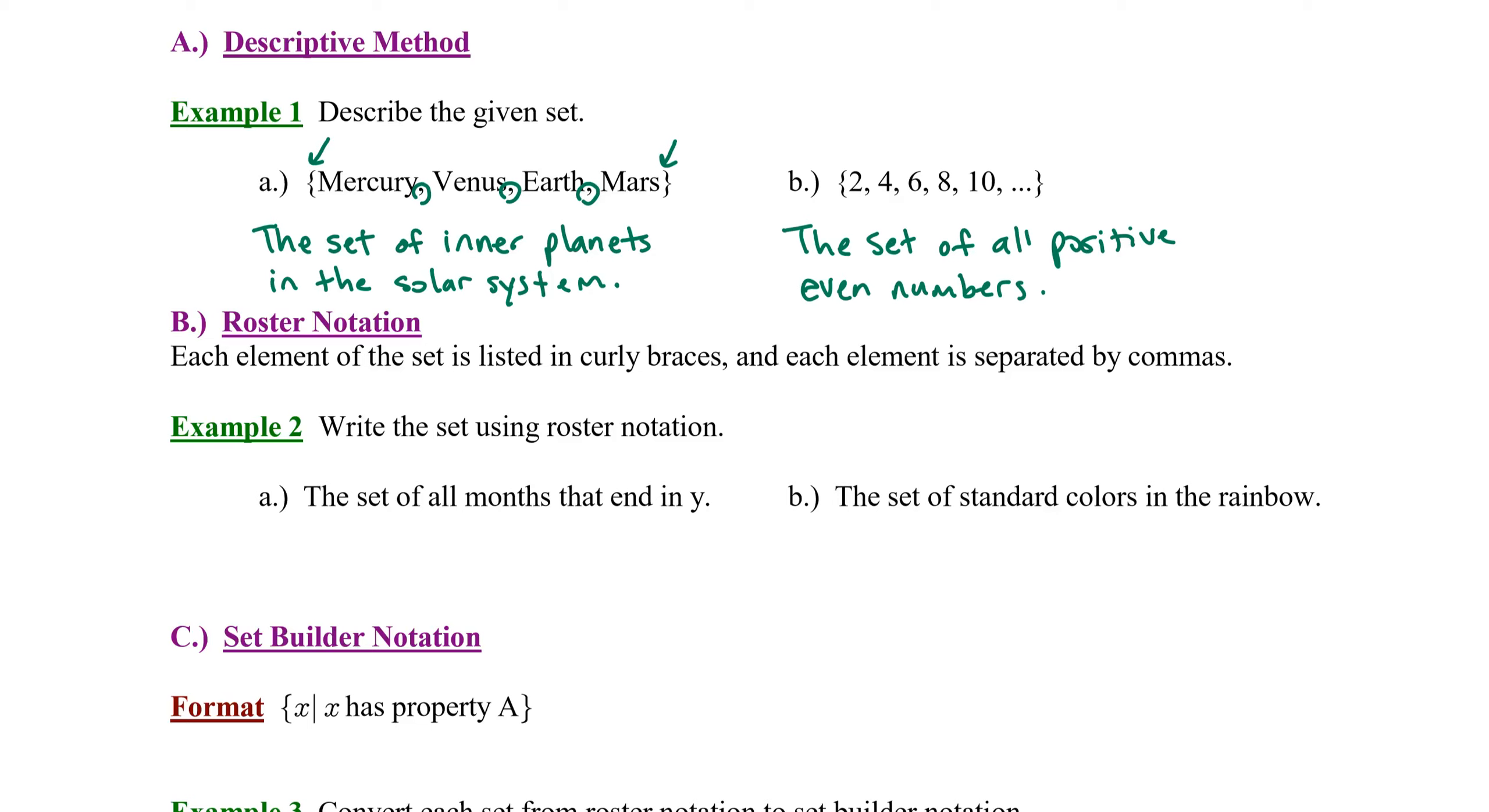There are two main ways that we express a set. Those two types of notation are called roster notation and set builder notation. In roster notation, each element of the set is listed in curly braces and each element is separated by commas.